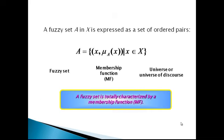Next, we are going to see about fuzzy sets. A fuzzy set A in X is expressed as a set of ordered pairs: A equals {(X, mu_A of X) such that X belongs to the universal set X}. Here, capital X is a universal set, mu_A of X is a membership function, and A is a fuzzy set. A fuzzy set is totally characterized by its membership function.